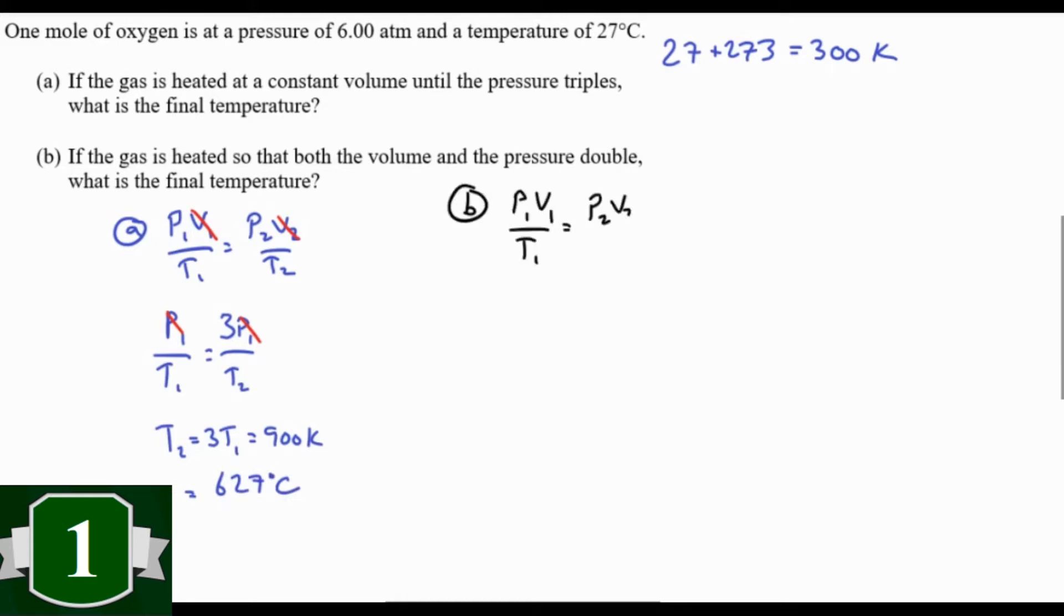Do the same thing for part B, only use 2P1 and 2V1. Cancel the P1V1's, solve, and you get four times the temperature or 1200 Kelvin. That's 927 degrees Celsius. See what I mean how without Kelvin you'd get this completely wrong? Quadrupling 27 gets you nowhere near 927 if you do it right.